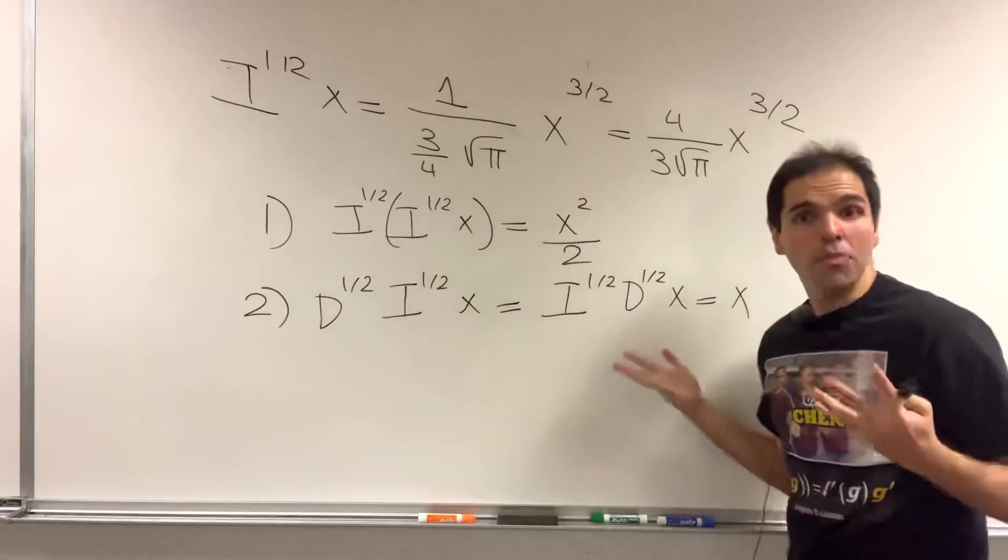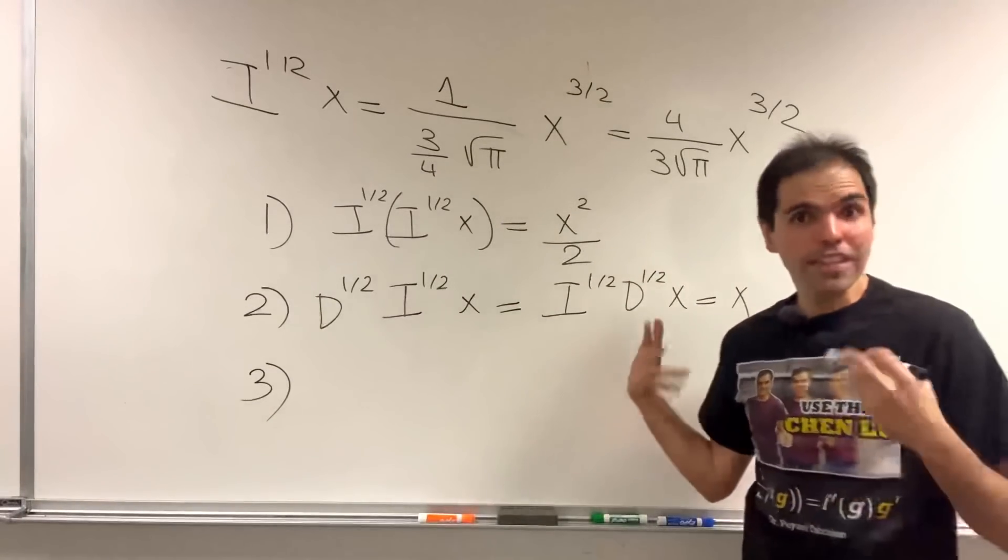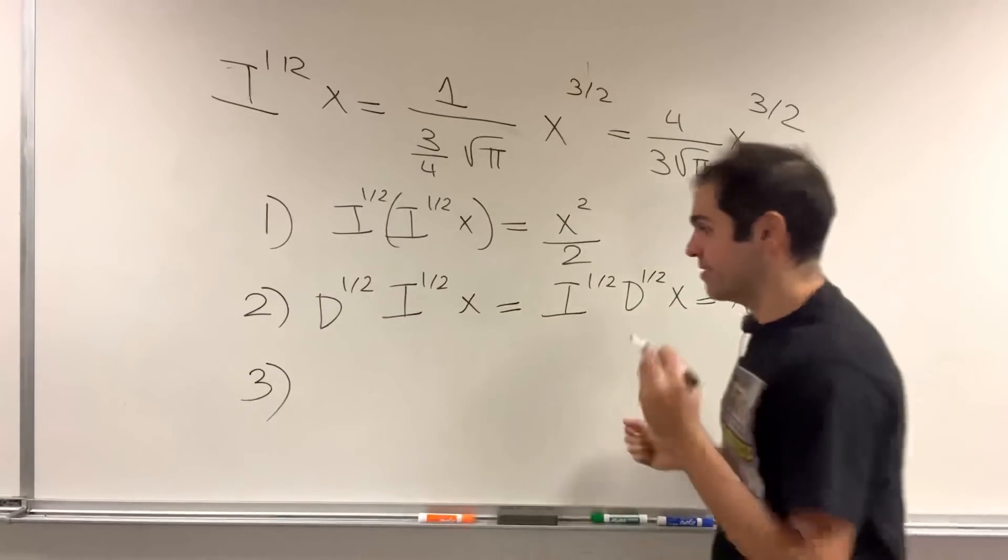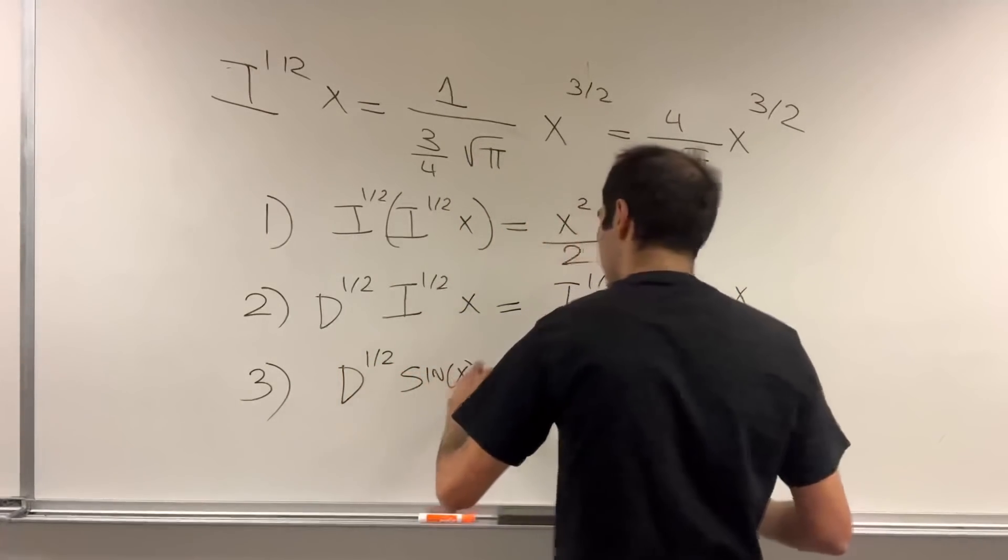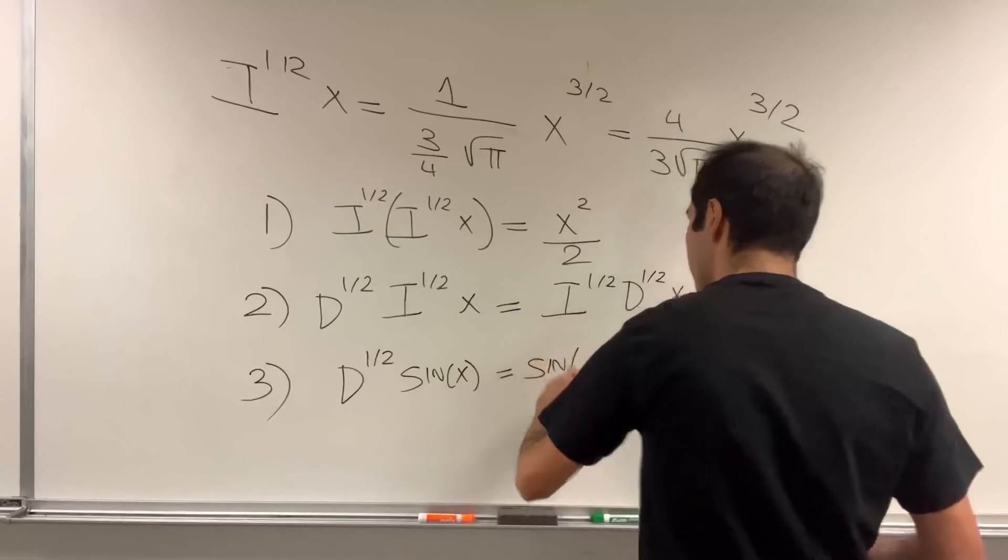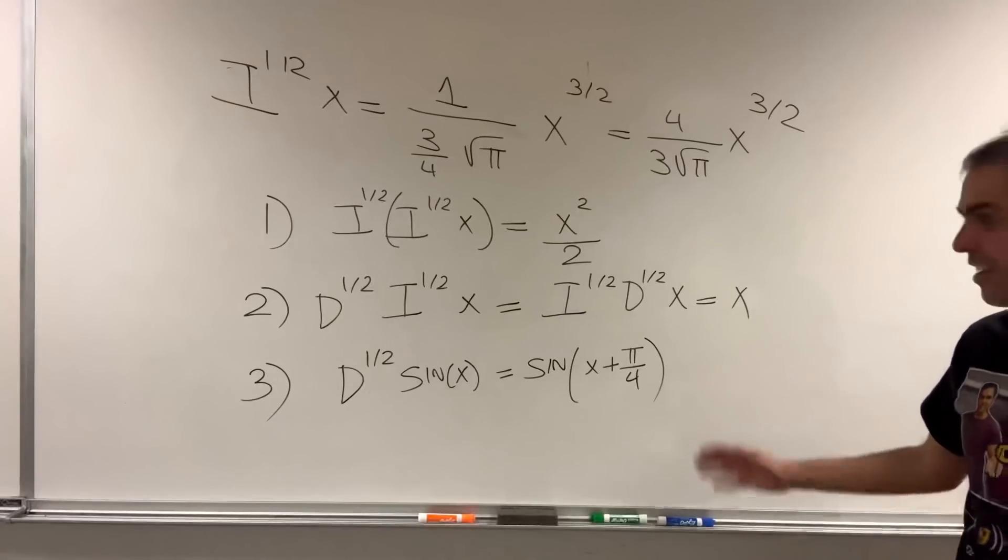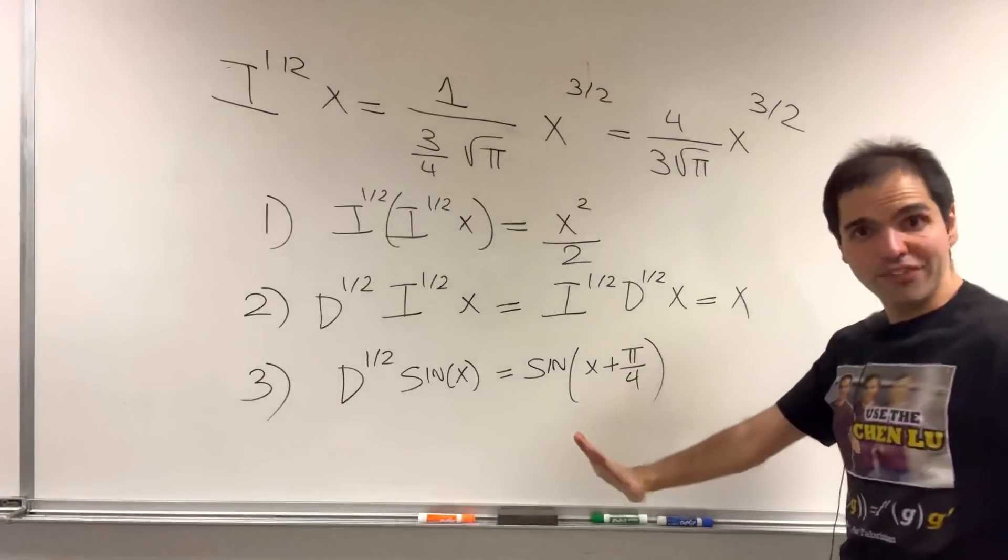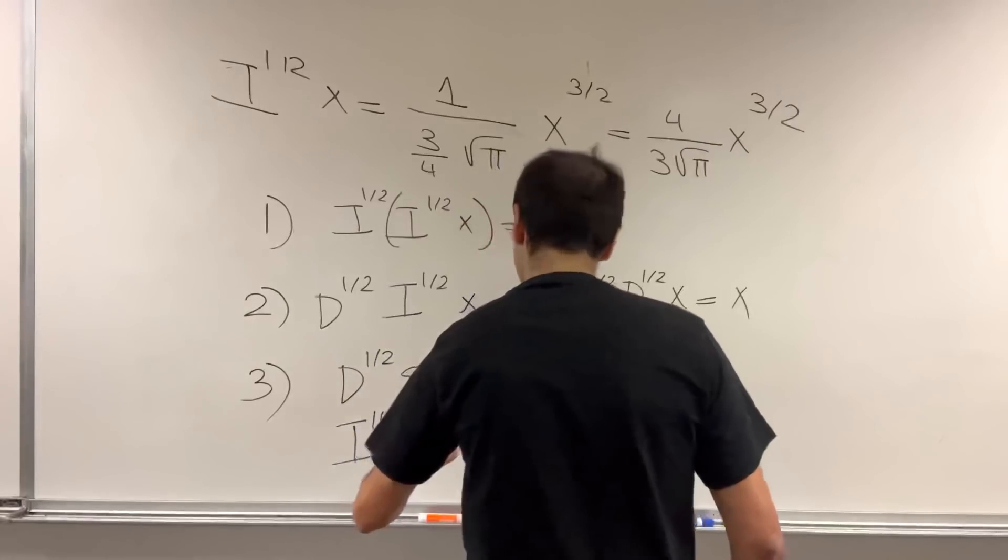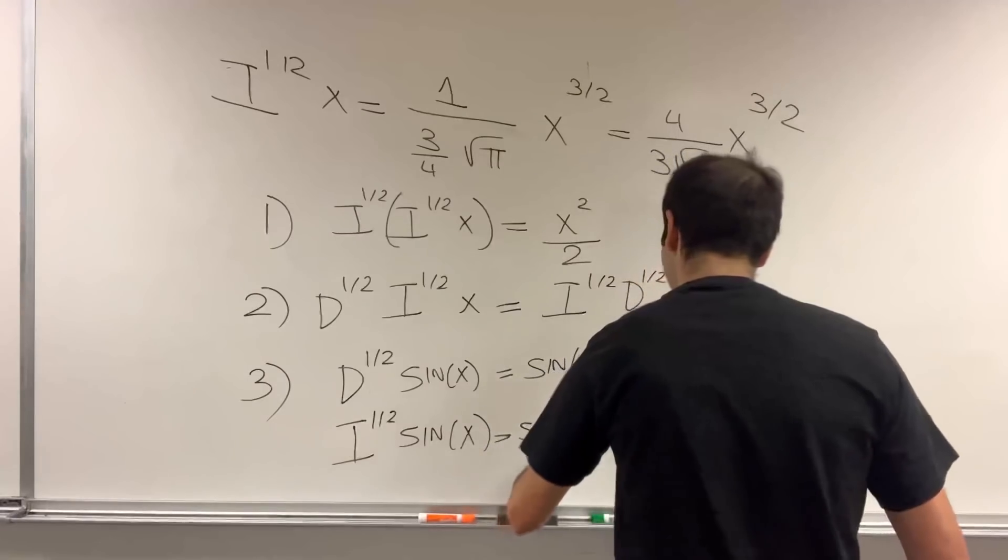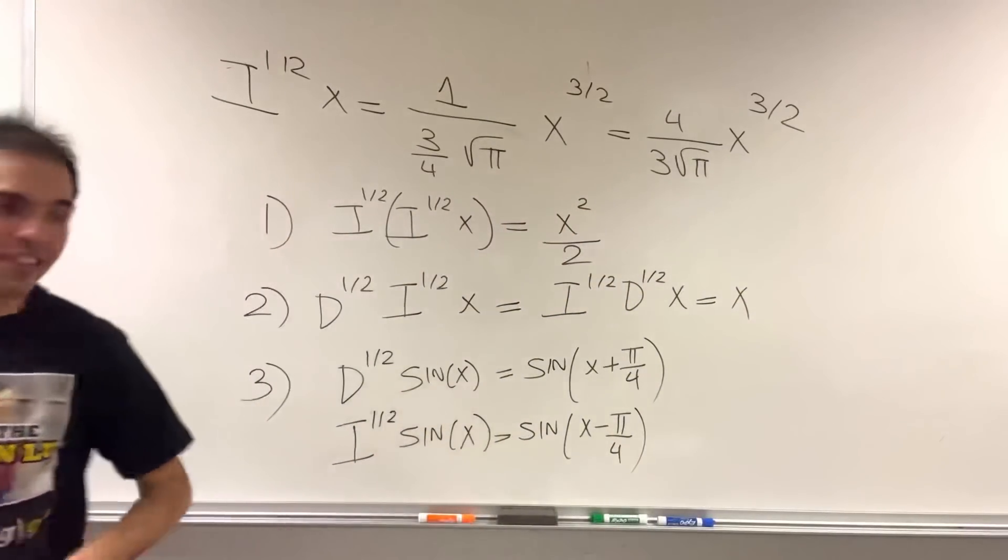And, finally, you may ask, what about for other functions? And, there's actually a very nice property with sines and cosines. Because, if you take the half derivative of sine of x, that just shifts sine by pi over 4. Sine of x plus pi over 4. Well, believe it or not, if you take the half integral, it shifts it back. So, half integral of sine of x, that is sine of x minus pi over 4, which really shows that they're inverses of each other.